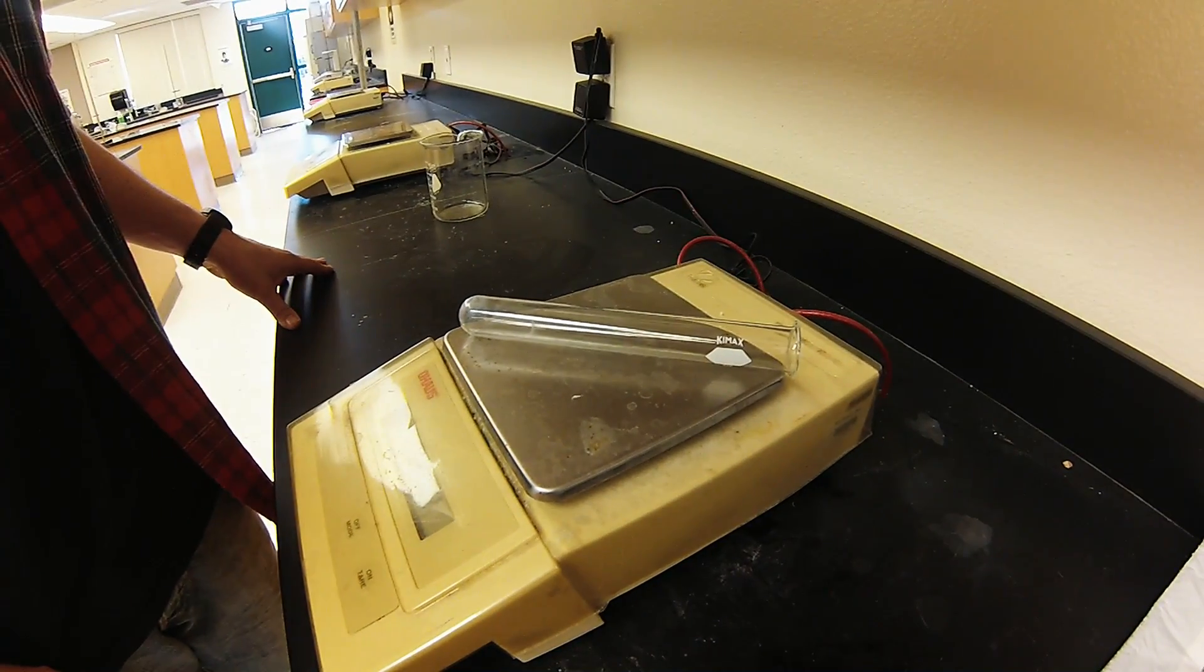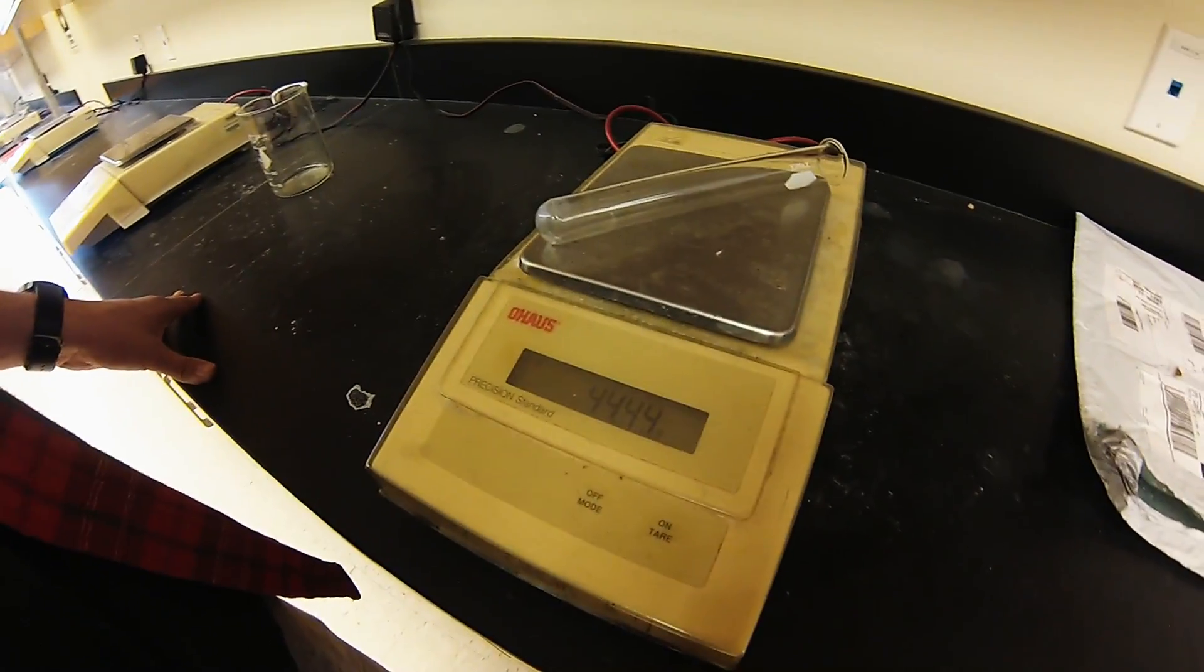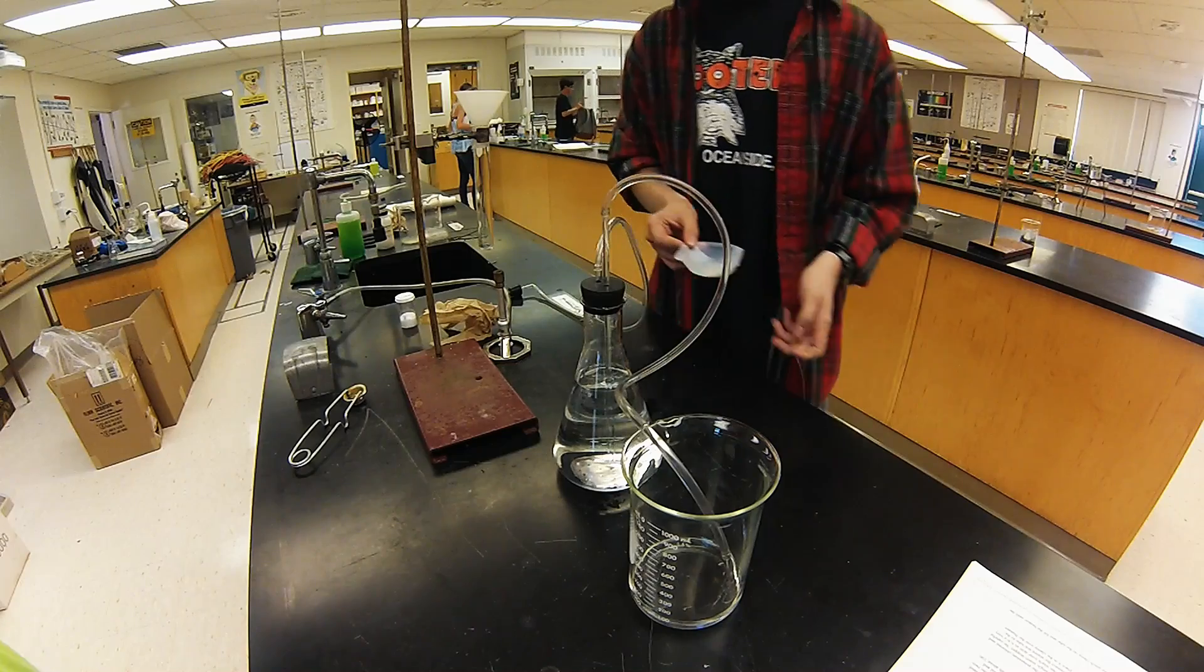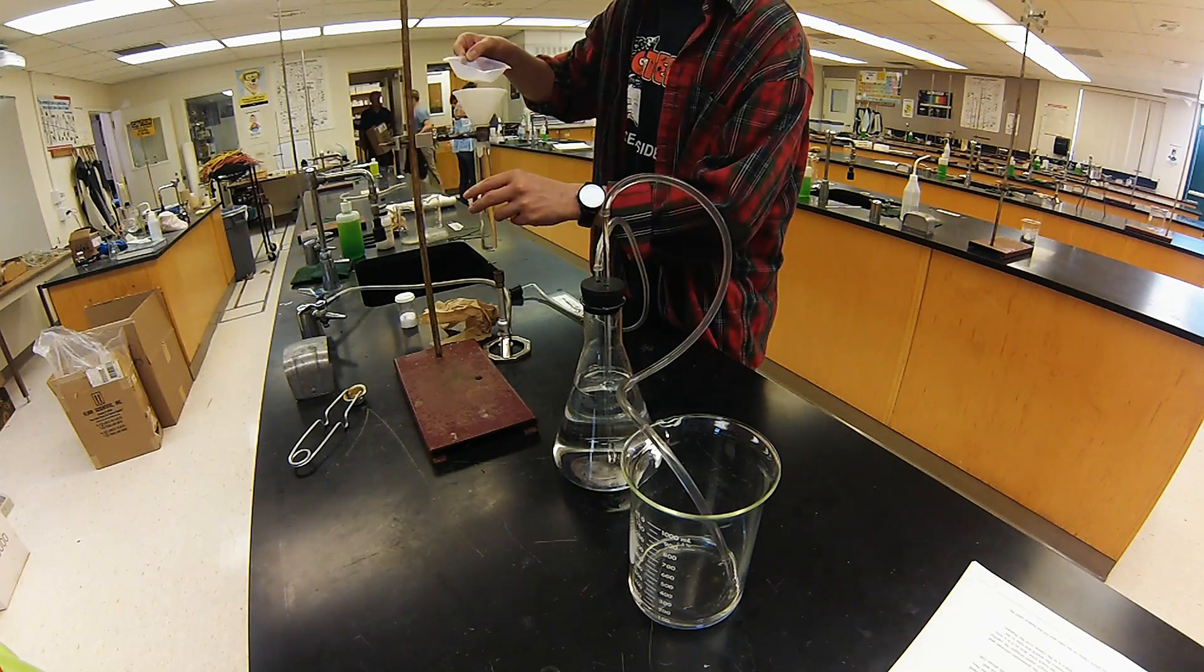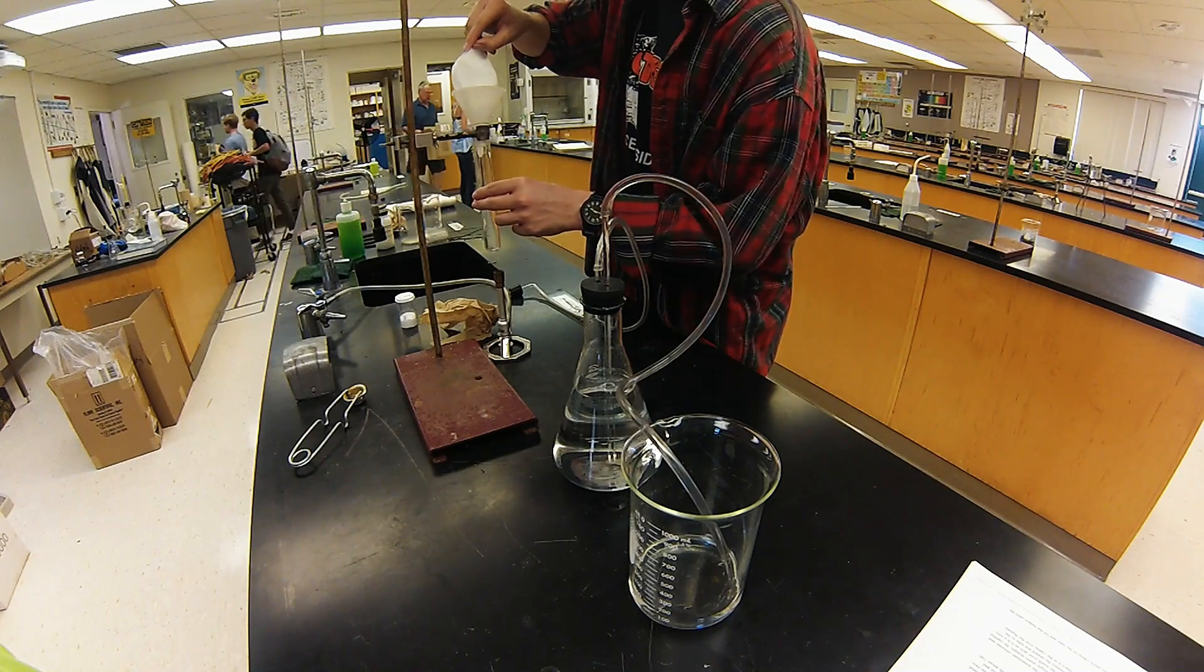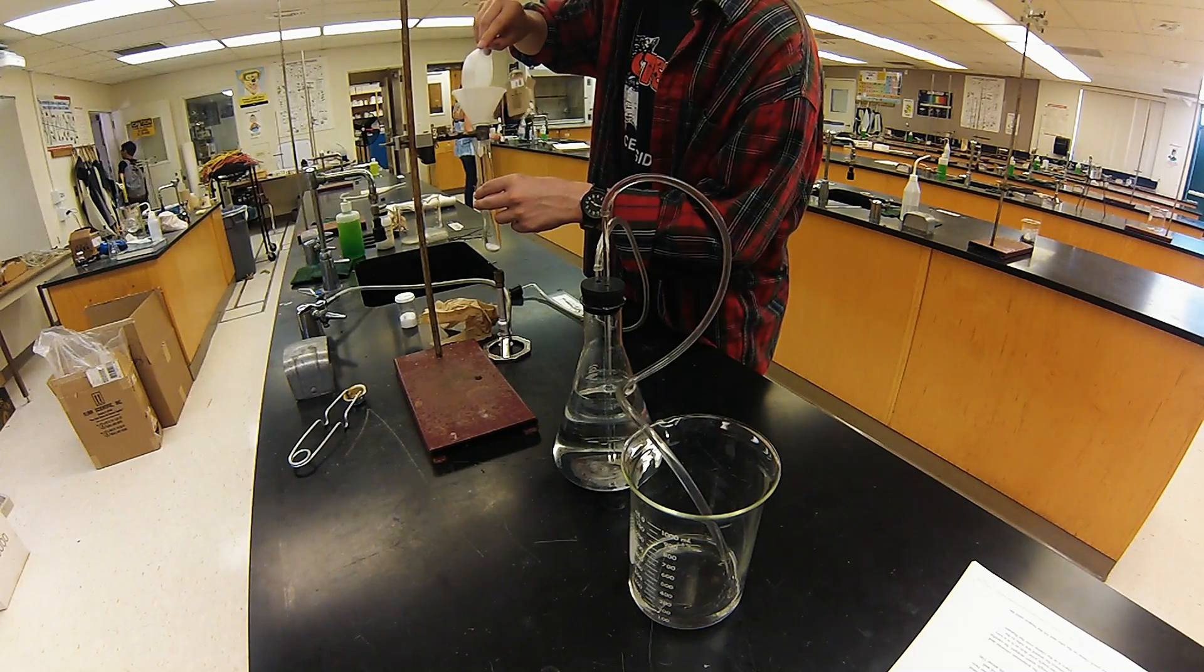Make sure your scale is zeroed and weigh it out. I'm getting the two grams of potassium chlorate that we weighed out and pouring it into our test tube using a funnel so I don't burn my skin.